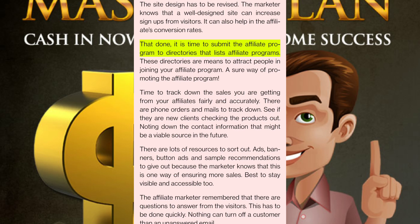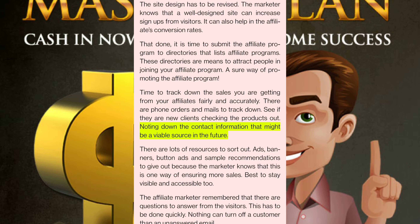It is time to submit the affiliate program to directories that list affiliate programs. These directories are a means to attract people to join your affiliate program — a sure way of promoting it. Time to track down the sales you are getting from your affiliates fairly and accurately. There are phone orders and mails to track down, new clients to check, and contact information to note down as a viable source in the future.